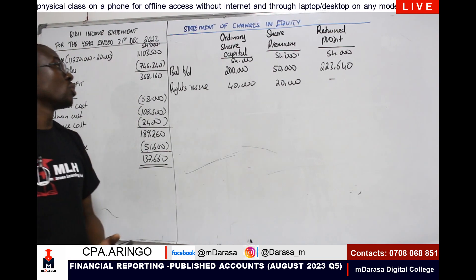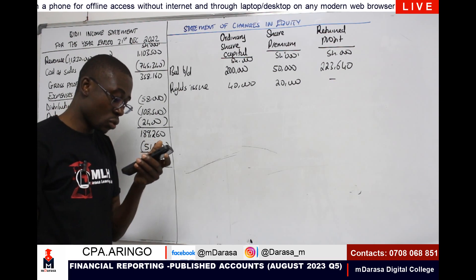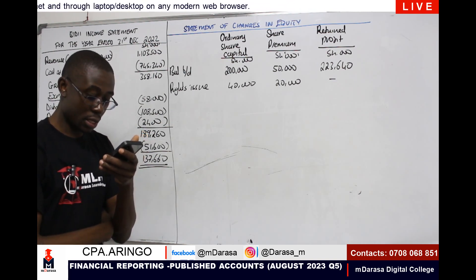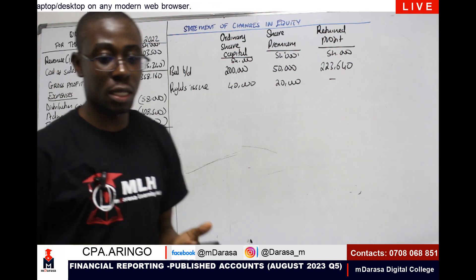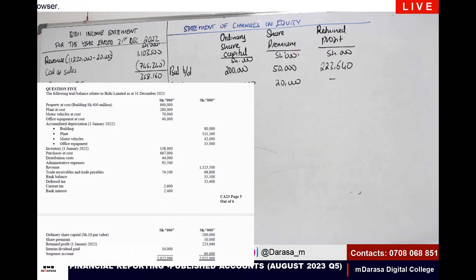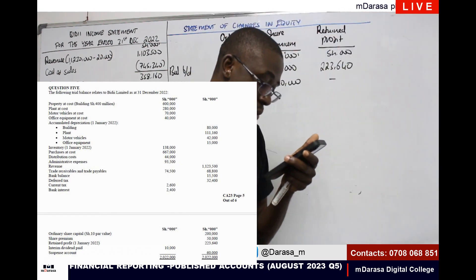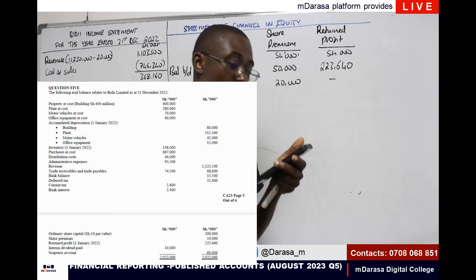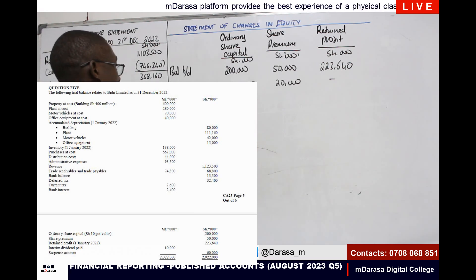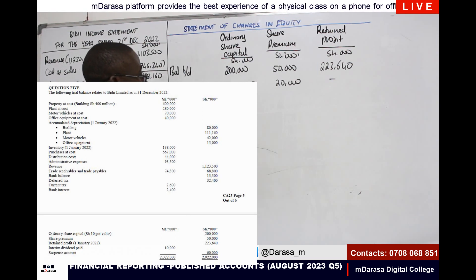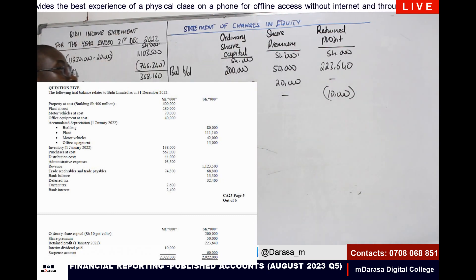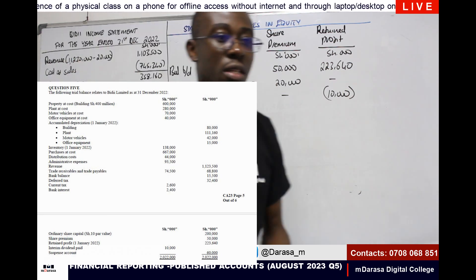The next item to consider will affect our retained profit. There was an interim dividend that was paid — if you check in our statements — of 60. Remember this rights issue transaction cleared the suspense account. So in this case, those are dividends that were paid. Dividends paid will reduce our retained profit in the statement of changes in equity, because we are paying these dividends from our profit.